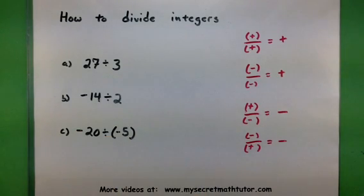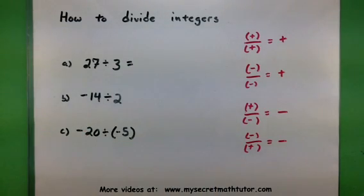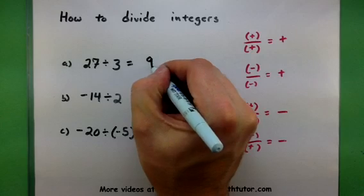Okay, so in the first one, I have 27 divided by 3. So I think of taking care of the division process as normal. So I think, okay, 27 divided by 3, looks like I get an answer of 9.